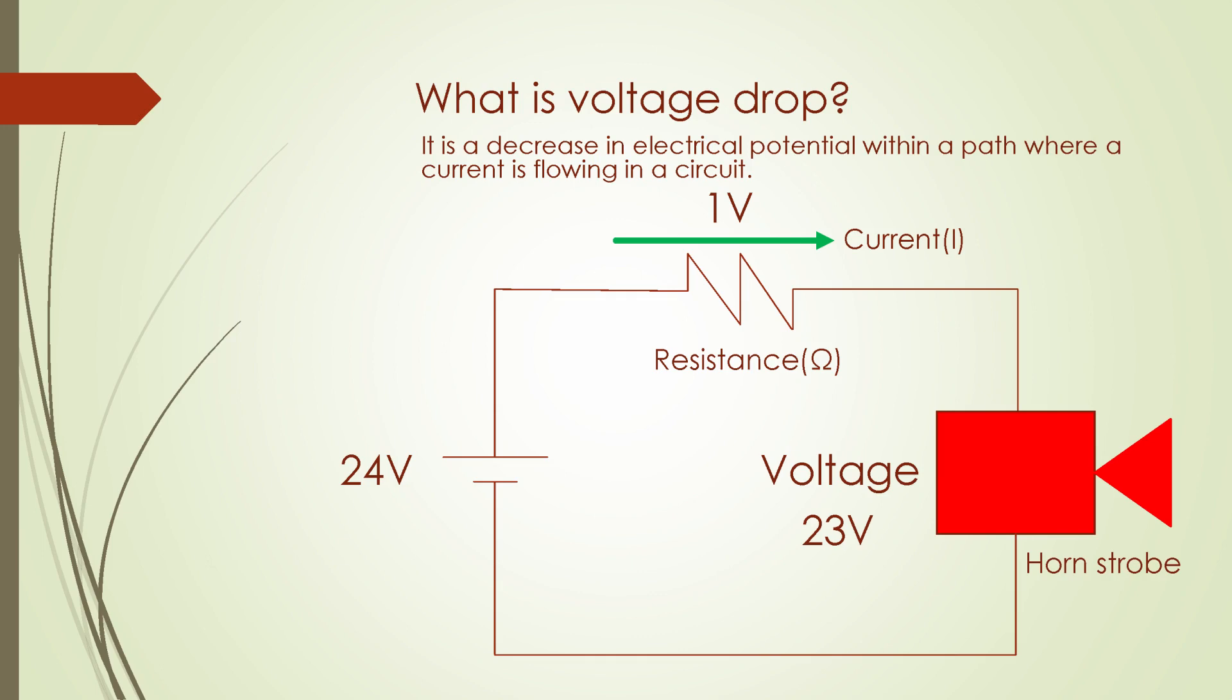What is voltage drop? It's important to know the basics and fundamentals of electricity so you can start working with the calculation of voltage drop. Voltage drop is the reduction in the amount of electrical potential within the electrical path where current is flowing. As you will see in the example illustration, the 24 volts power source is supposed to deliver this amount of voltage to the fire alarm horn strobe, but because of the voltage drop of one volt within the conductor, the horn strobe receives only 23 volts.